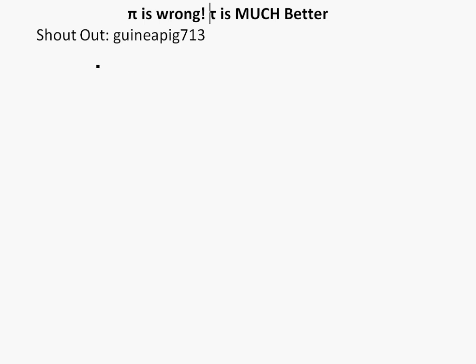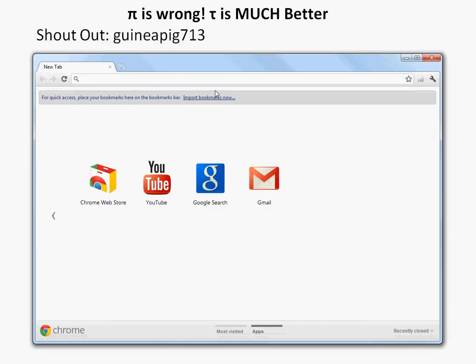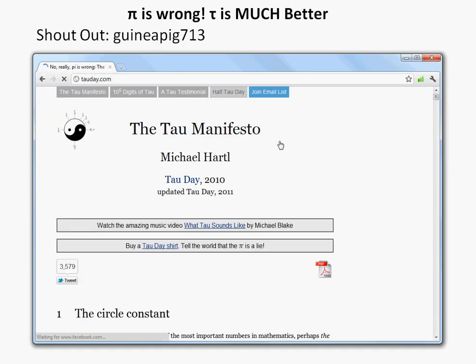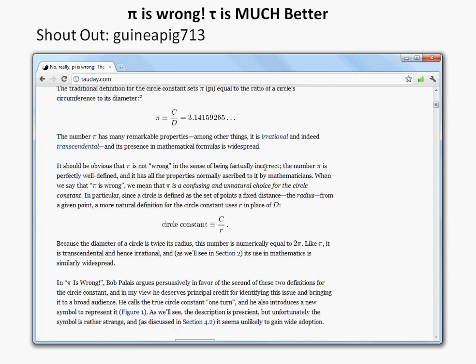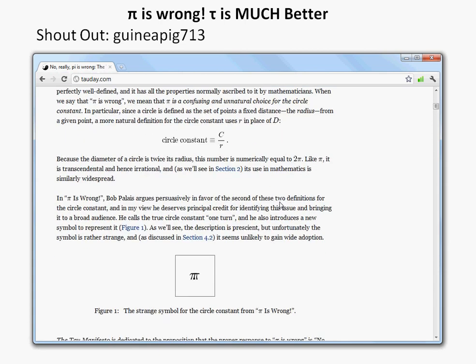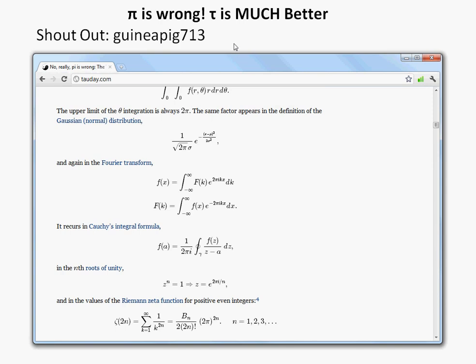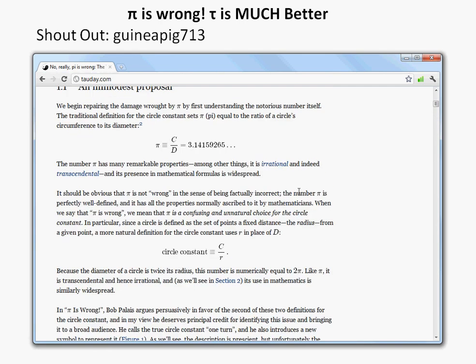He actually showed me in my other video and commented that there's this site called TauDay that explains what I'm trying to get at. So this site he showed me, TauDay.com. So this guy, Michael Hartle, he wrote this Tau Manifesto, but you can actually read it all online.